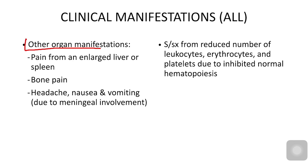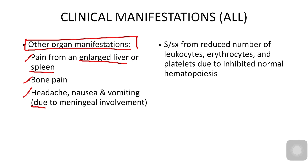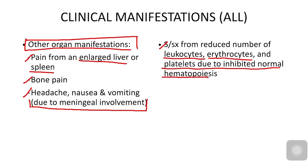Clinical manifestations of ALL are similar to AML but affect children. Signs include enlarged liver and spleen, bone pain, headache, nausea, and vomiting due to meningeal involvement. Laboratory findings show decreased leukocytes, erythrocytes, and platelets due to inhibited normal hematopoiesis.